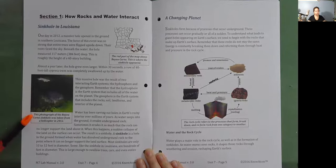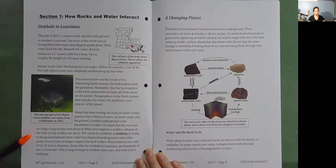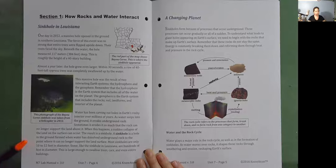Water has been carving out holes in Earth's rocky interior over millions of years. As water seeps into the ground, it erodes underground rocks. Sometimes it erodes it so much that the rock can no longer support the land above it. When this happens, a sudden collapse of the land on the surface can occur. The result is a sinkhole.